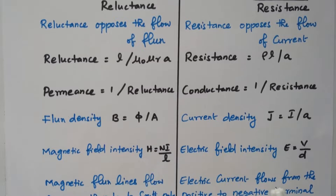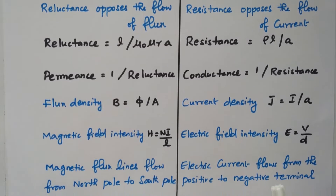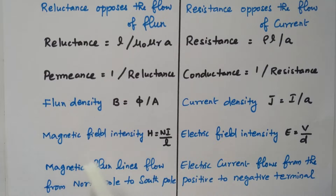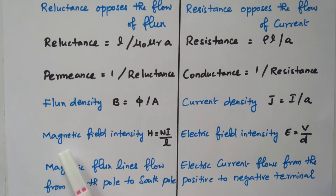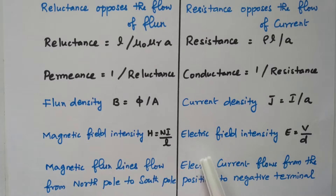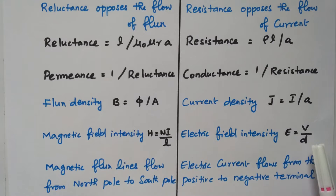Magnetic field intensity H = Ni / L, which is MMF divided by length. Similarly, electric field intensity is given by E = V / d, which is potential divided by distance.